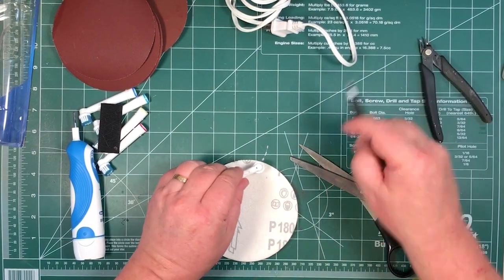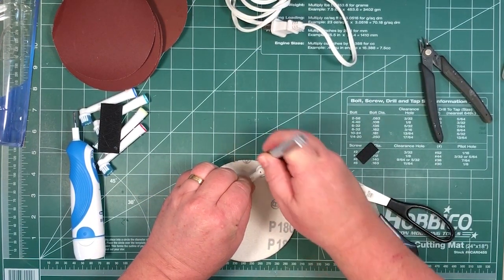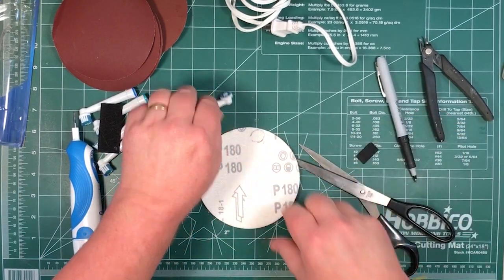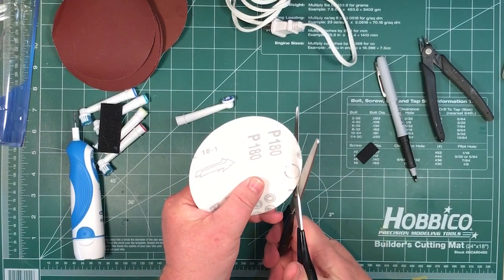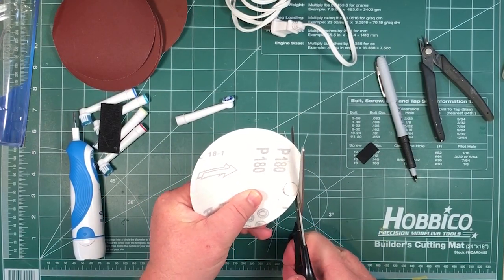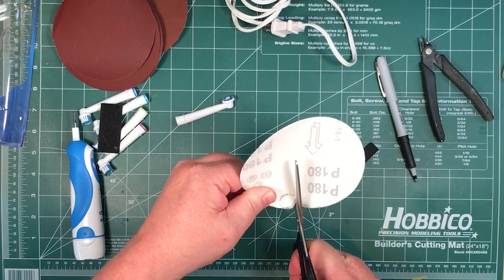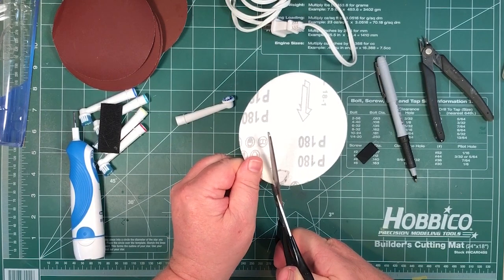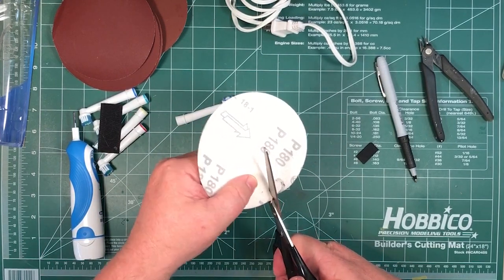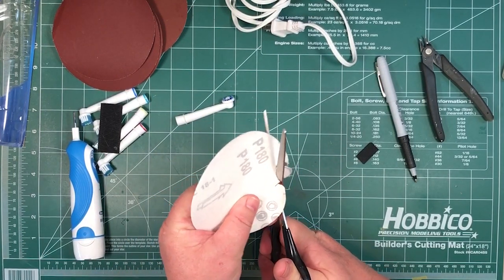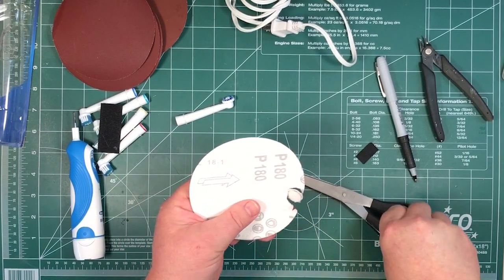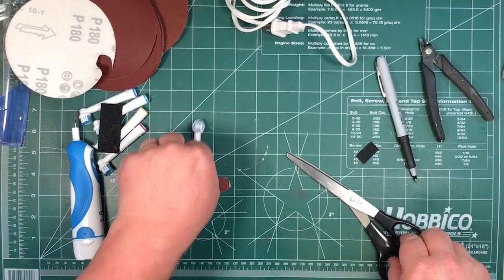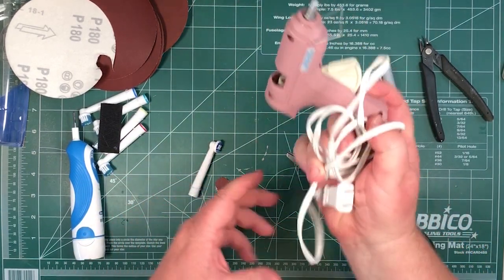So I'll just put that on there, draw around it very roughly. No need to get excited about getting it perfect. And then quickly cut a circle out. Again, you don't have to worry about being too accurate about this. That'll do for that. Next thing is warm up the glue gun.